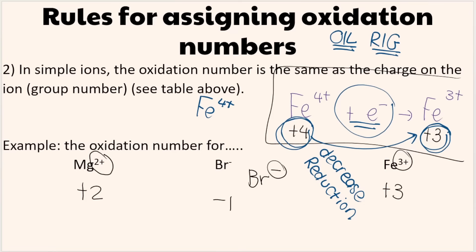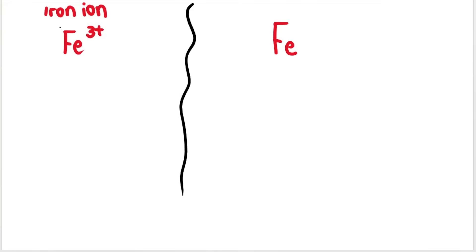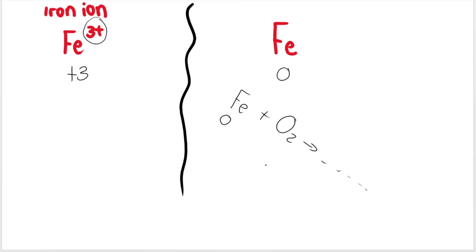Just to reiterate the past two rules: if I ask for the oxidation number of Fe³⁺, you say +3 because it equals the charge. If iron is standing by itself — for example in Fe + O₂ — that oxidation number is zero. And oxygen in O₂ is also zero for that matter.